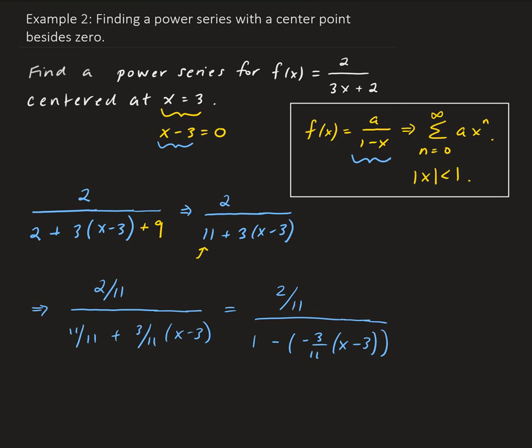Now we have the form we need. We have A — which is 2 over 11 — and this part acting as x, which you can think of as the R value from a geometric series. So now we have all the components to write our series.